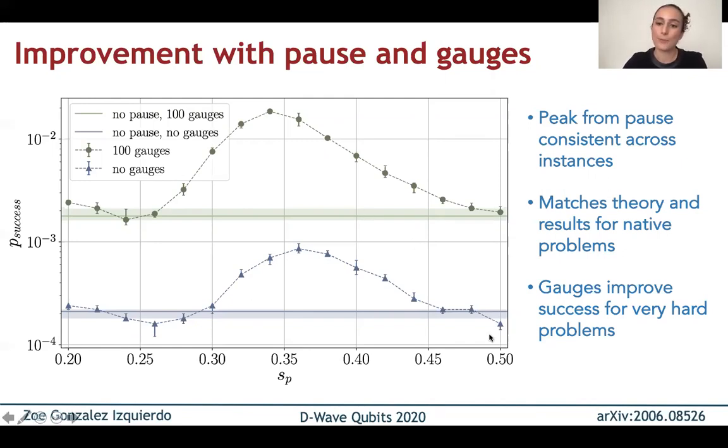Now, as for why the gauges improve the results so much, because these are the results without gauges, and then these are with gauges, so the probability of success is much higher. Running without gauges is equivalent to just picking one random gauge. And then as we do more, typically we would get some that are better, some that are worse, and that usually evens out. However, in this case, because we start out with a very low probability of success, and we have a lower bound at zero,